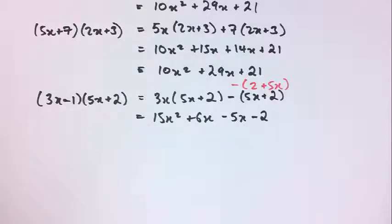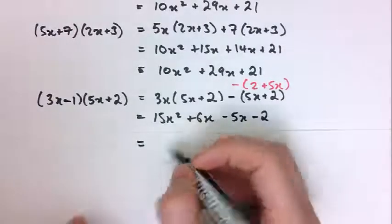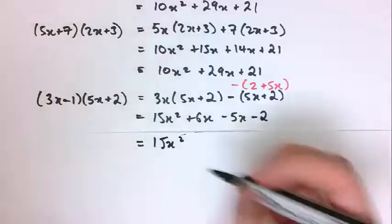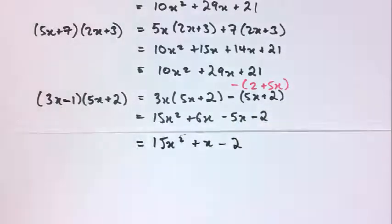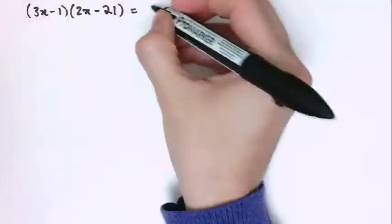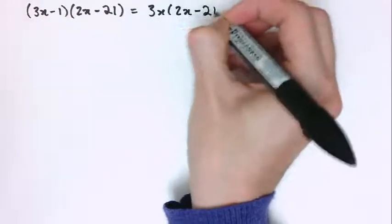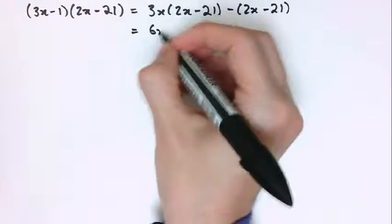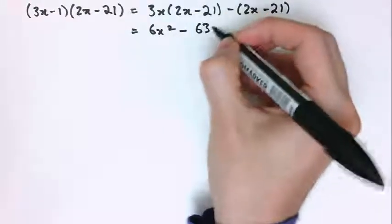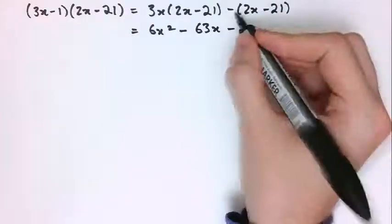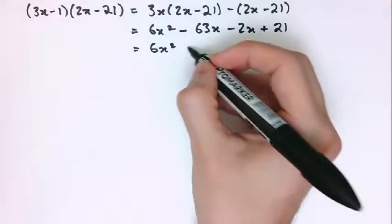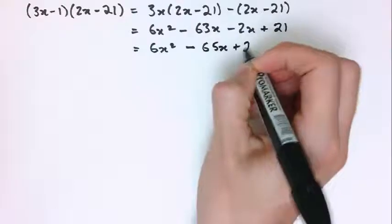Avoid that mistake — if there's a minus outside a bracket, be very careful. Collecting together plus 6x and minus 5x gives 15x squared plus x minus 2. You could also have a minus in both brackets: (3x - 2)(2x - 21) gives 3x lots of (2x - 21) minus 2x minus 21, which is 6x squared minus 63x minus 2x, and minus times minus 21 is plus 21, giving 6x squared minus 65x plus 21.